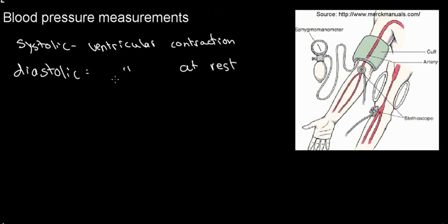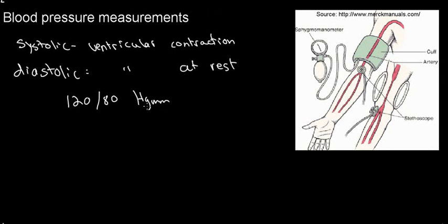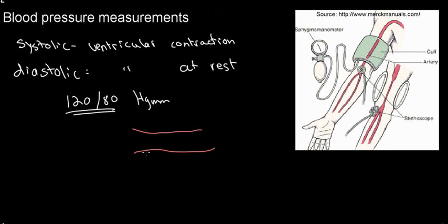Diastolic pressure is when the ventricles are at rest or expanding and blood is flowing toward the ventricles. For example, if I measure someone's blood pressure and it's 120 over 80 mmHg, the systolic pressure is the higher number and the diastolic is the lower number.